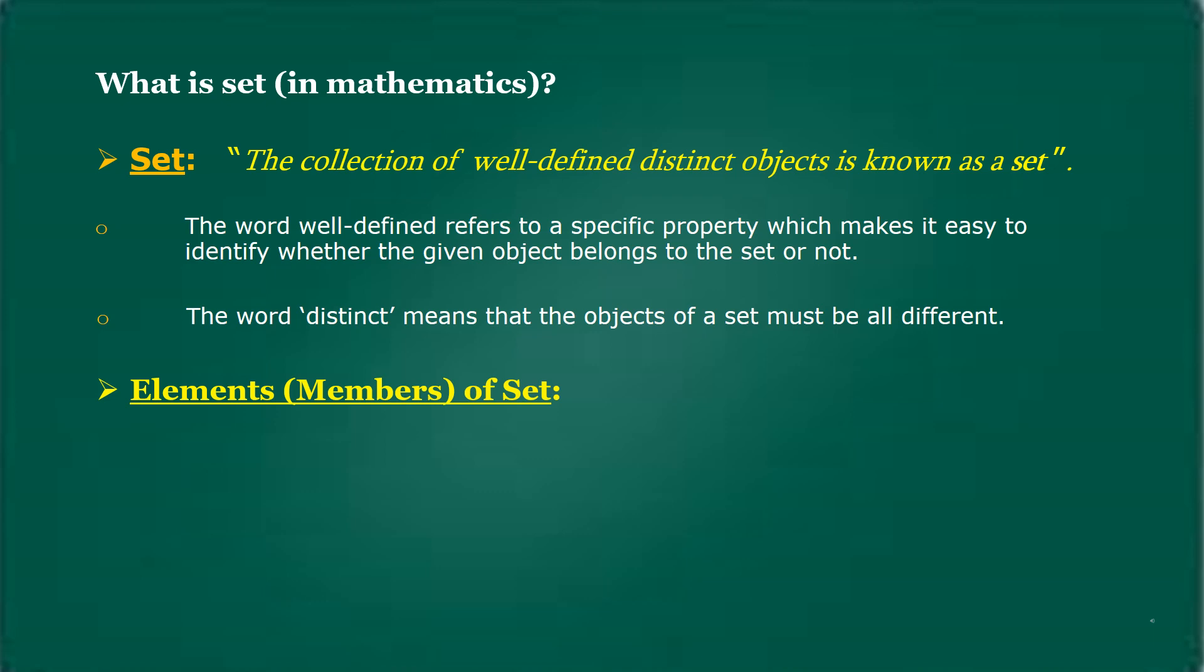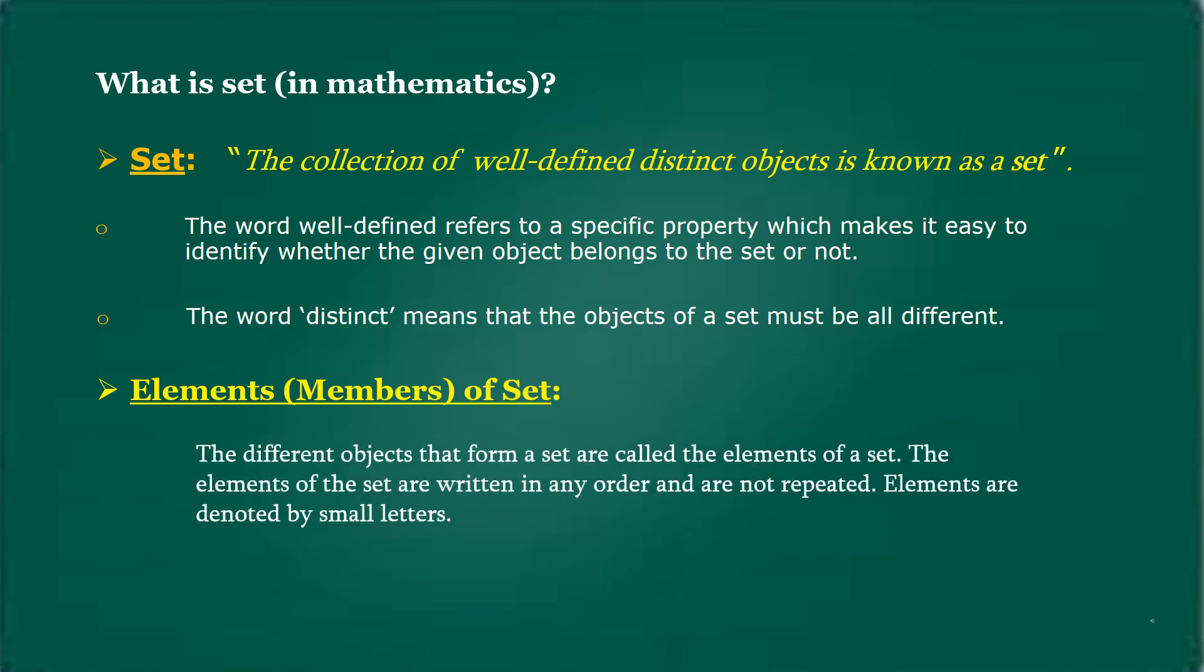Elements (members) of a set: the different objects that form a set are called the elements of a set. The elements of the set are written in any order and are not repeated. Elements are denoted by small letters.